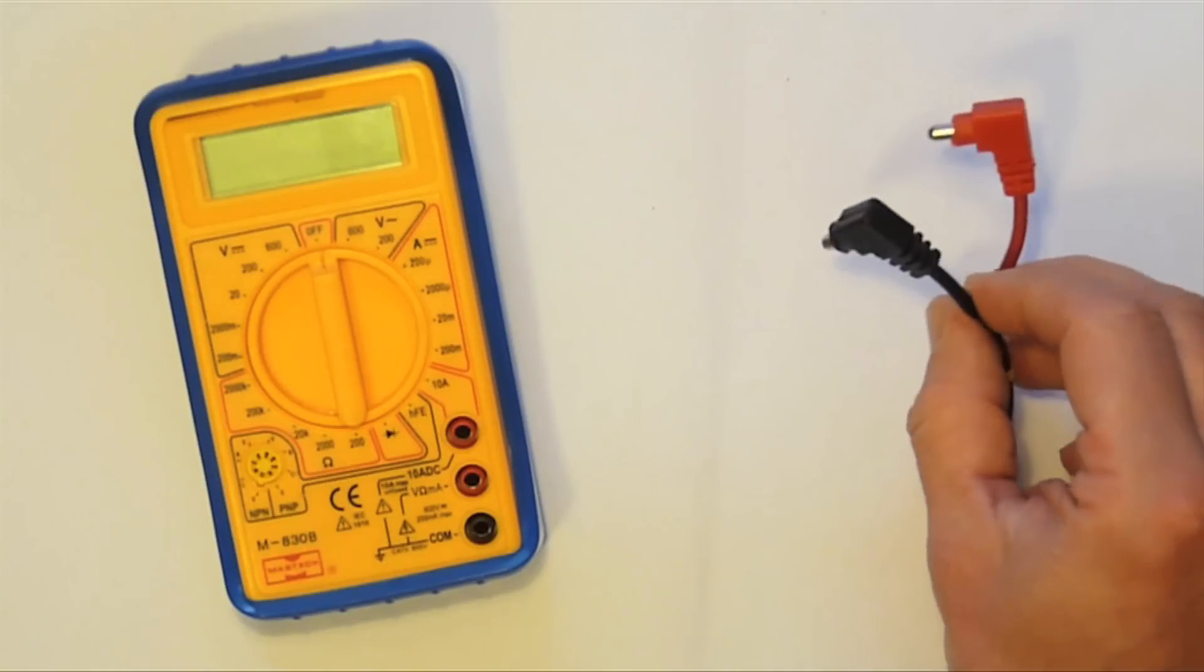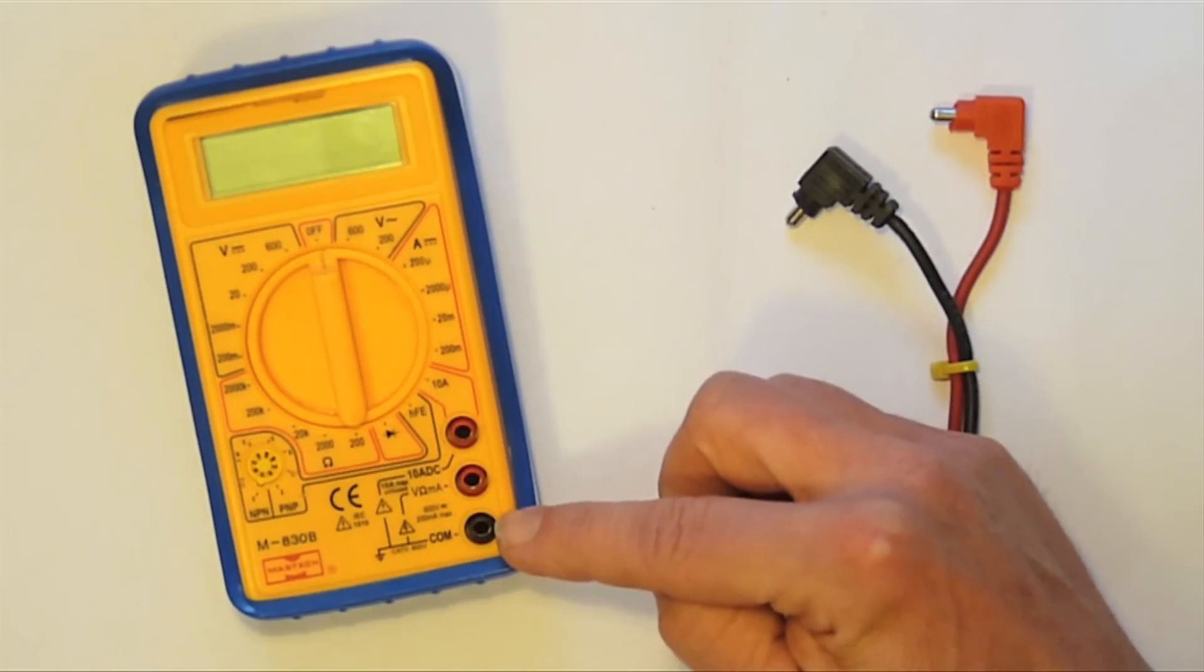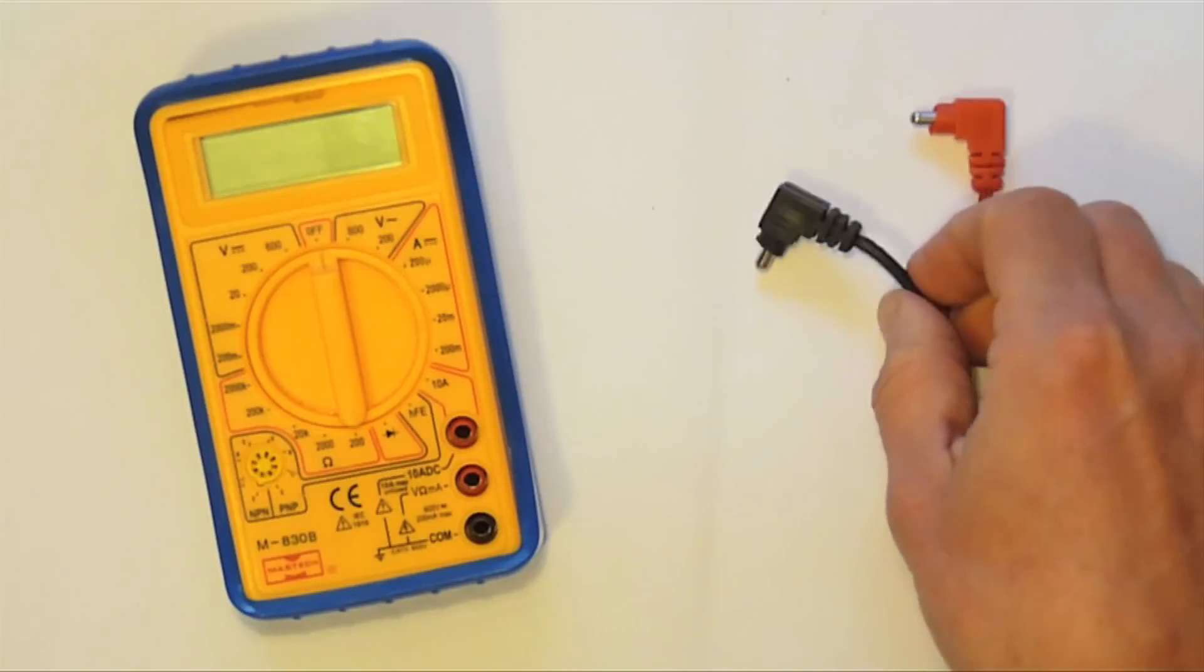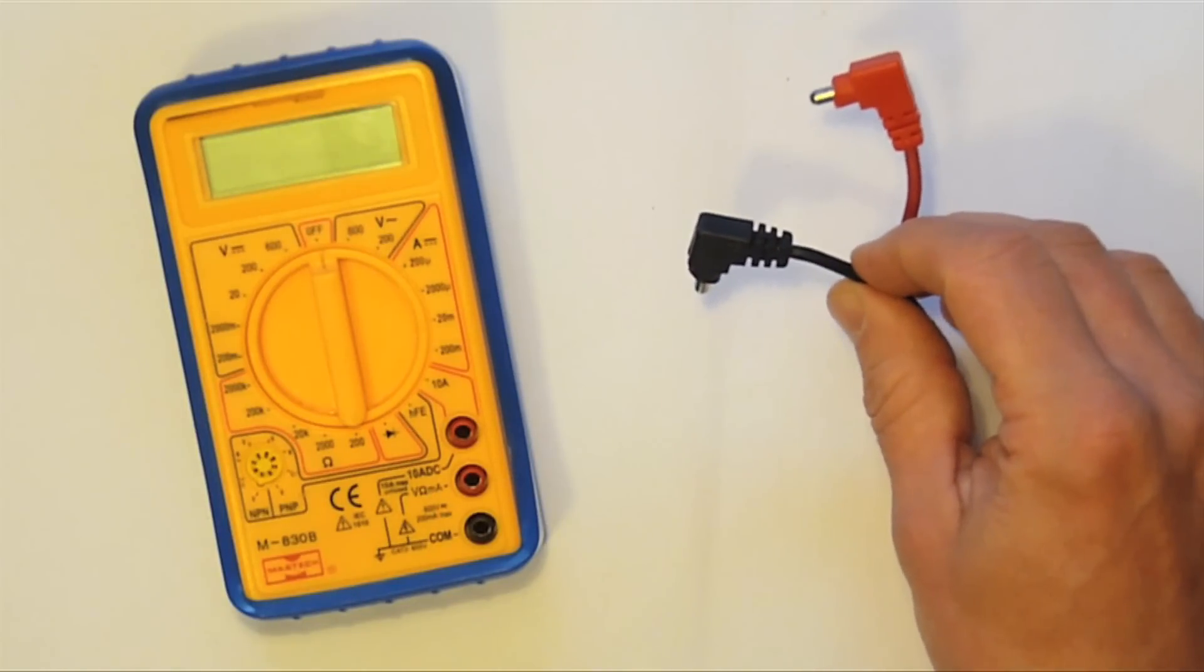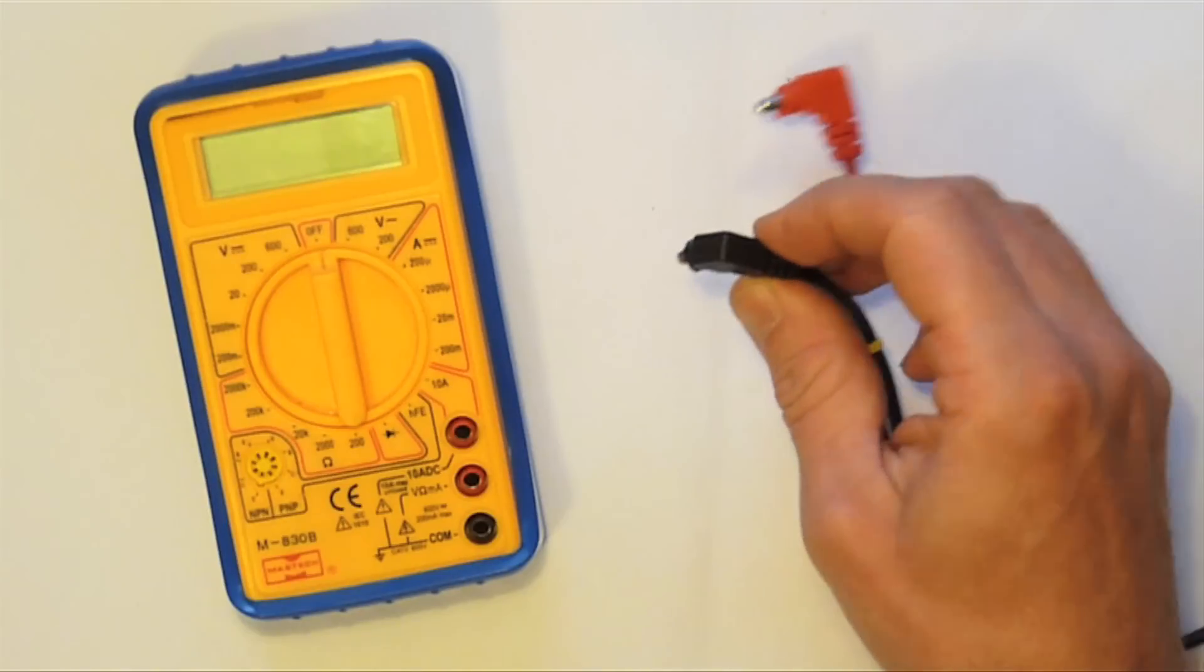Multimeters come supplied with leads and one lead should always be plugged into this socket marked COM for common. The leads are both just insulated copper wires, but by convention we always plug the black lead into COM.